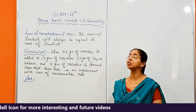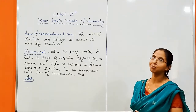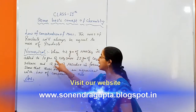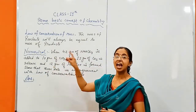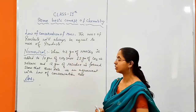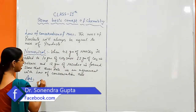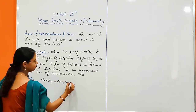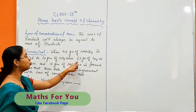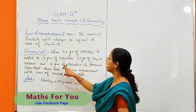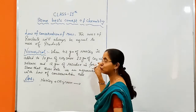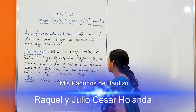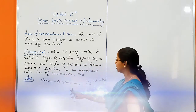First we have to decide what are the reactants and what are the products. We can see that 4.2 grams of NaHCO3 and 10 grams of CH3COOH are added together, so these two are the reactants. Then 2.2 grams of CO2 is released and 12 grams of residue is formed, so these two are the products.